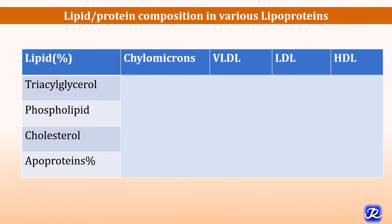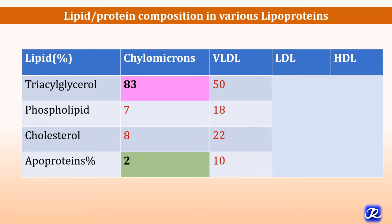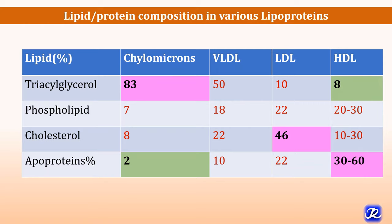Now let's see the lipid-protein composition in various lipoproteins. Chylomicrons have 83% triacylglycerol, 7% phospholipid, 8% cholesterol, and 2% apoproteins. VLDL has 50% TAG, 18% phospholipid, 22% cholesterol, and 10% apoprotein. LDL has 10% triacylglycerol, 22% phospholipid, 46% cholesterol — the highest — and 22% apoproteins. HDL has 8% triacylglycerol, 20–30% phospholipid, 10–30% cholesterol, and 30–60% protein — the highest percentage of protein.